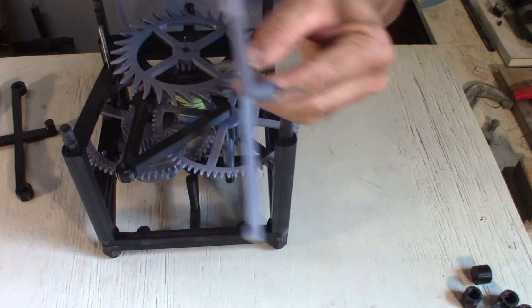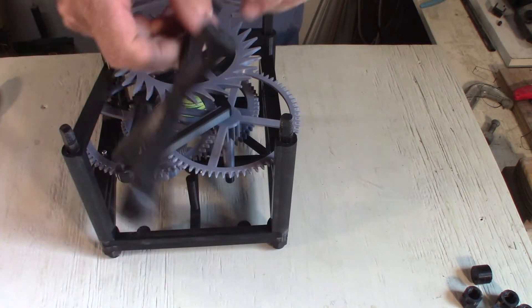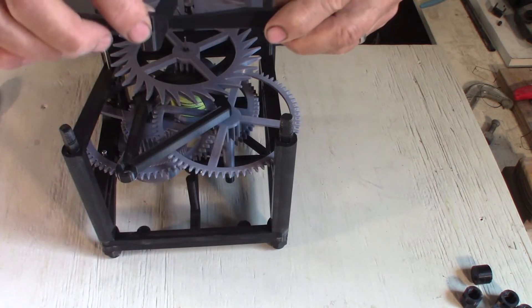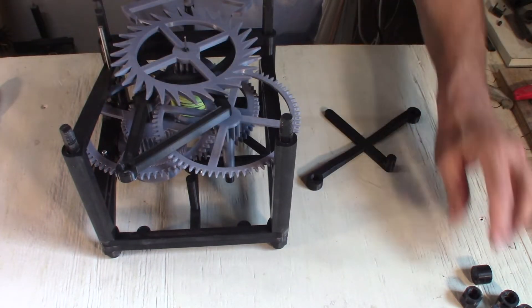On the anchor I put a two millimeter washer here and a two millimeter here. I can then adjust exactly the position of the anchor with the escape wheel. This is the back escapement frame, this comes up. That's where the pendulum will hook up.